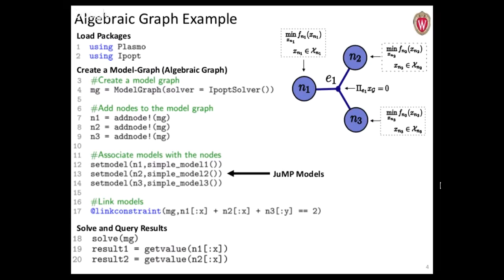The real workhorse is just creating the link constraint, which works the same as a JuMP constraint macro — it more or less wraps the constraint macro, but also defines the hypergraph topology of how nodes are connected by a collection of edges. Then you can solve it. In this case we're solving with Ipopt, not really using the structure, but we still get the solution back in that structure — solving in a serial optimization solver but getting a structured solution.